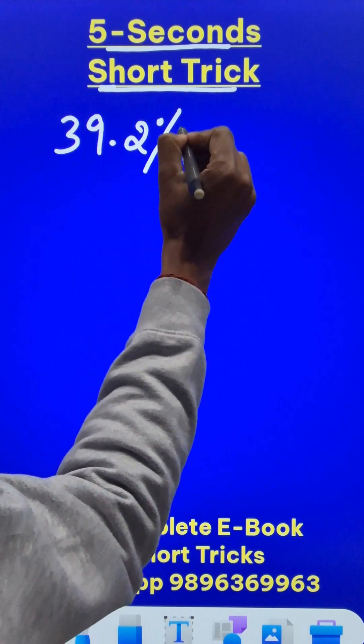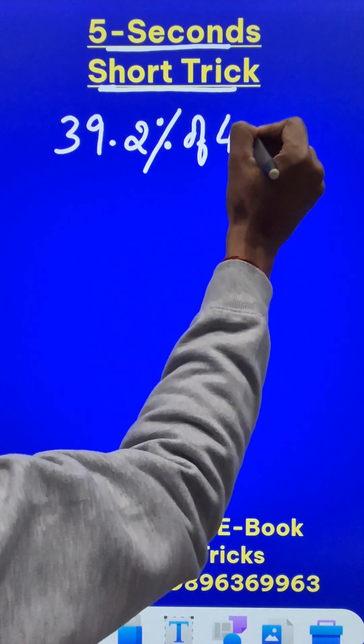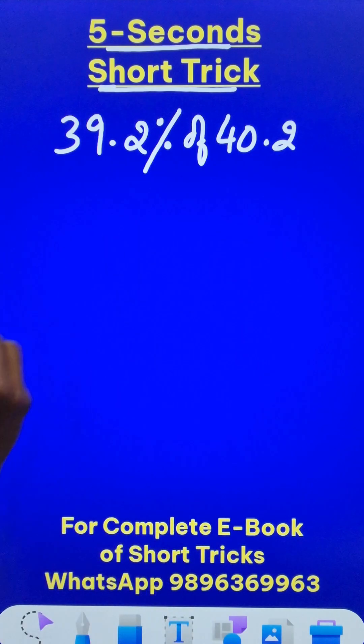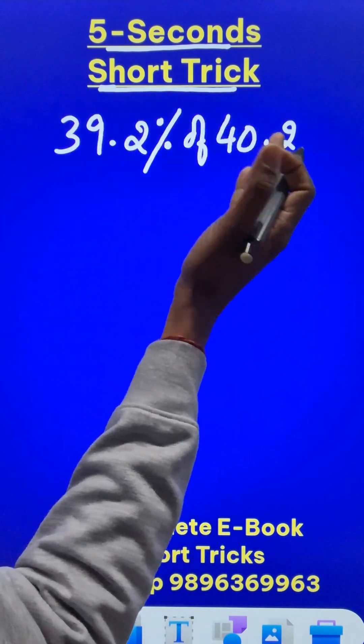Look at this, it's a big decimal percentage of some number like 40.2, another decimal here. How do we do this? The traditional approach is going to consume so much of time.